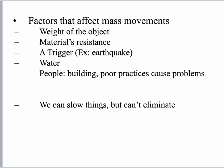Just like factors of weathering, there are factors that affect mass movements: the weight of the object, the material's resistance — some material won't break as easily — and a trigger, which might be an earthquake, a person, or a heavy rain that causes material to go downhill. Water is always a big factor; a ton of rain is going to cause things to move.